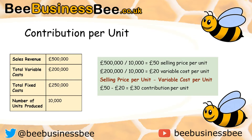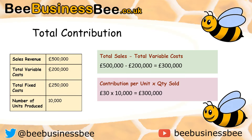If you got £30, well done. Total contribution can be calculated in two ways. Total sales revenue minus total variable costs: £500,000 minus £200,000 gives £300,000. Just to check, let's do it the other way — contribution per unit of £30 multiplied by 10,000 units also gives £300,000. And there you have the total contribution calculated.